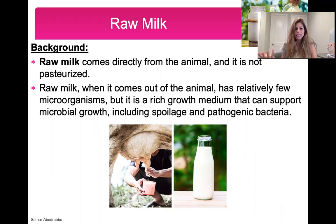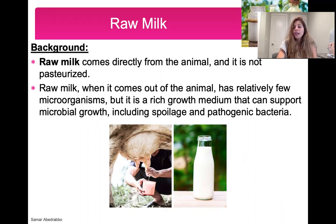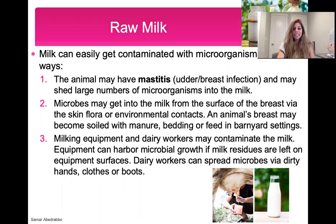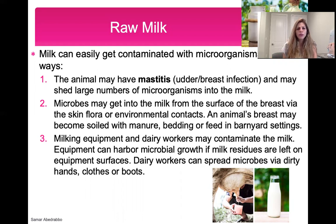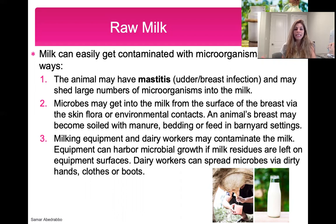Spoilage bacteria ruin the taste of food. Because milk is so nutritious, it can easily grow microbes — just know that when it comes out, it doesn't have a high count of microbes. But because it is so nutritious, it can really easily and quickly get contaminated. That's why typically people who drink raw milk will collect it and boil it right away and store it in the fridge, or put it in the refrigerator rather quickly.